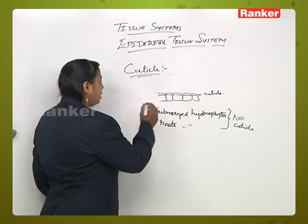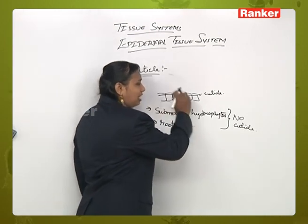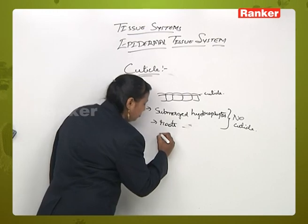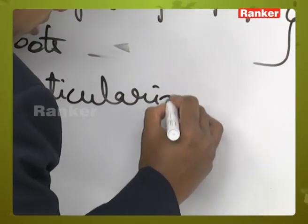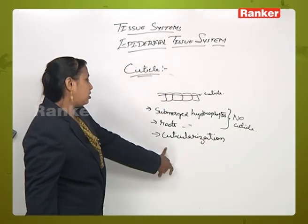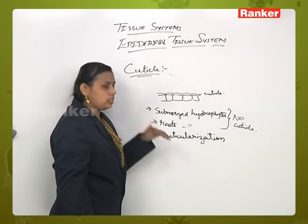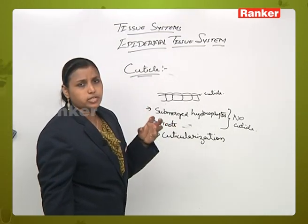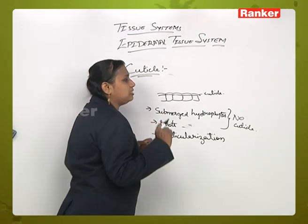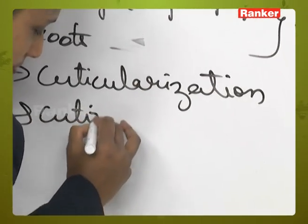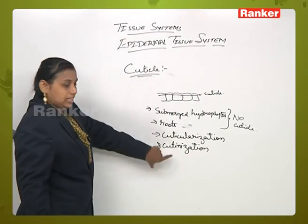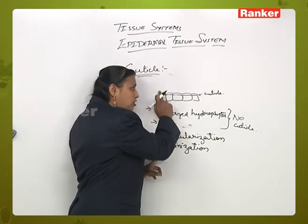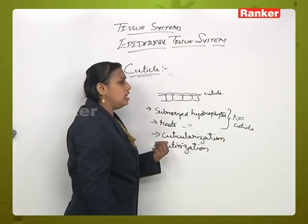There are two terms to know here. If the cuticle layer forms a continuous layer on the epidermis, that is called cuticularization. If the cuticle is deposited only in certain areas on the epidermis, that is called cutinization. If there is a deposition of cutin at certain places on the epidermis, that is cutinization; if it occurs as a continuous layer, that is cuticularization.